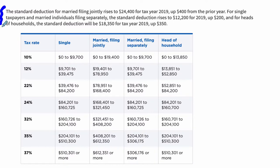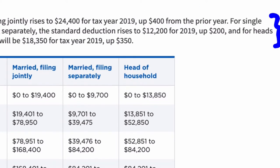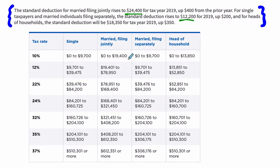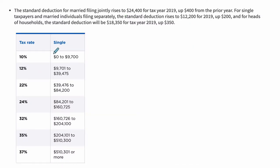I grabbed this definition right off the IRS website. It turns out there are two types of standard deductions: $24,400 for married filing jointly, and $12,200 for single. Deductions are the amounts that you subtract from your annual gross income — the amount that will not be taxed — and what's left over is your taxable income. To keep this simple, let's assume we're filing single.